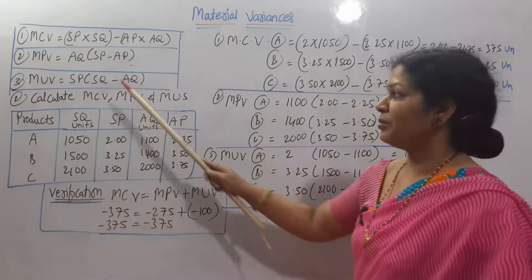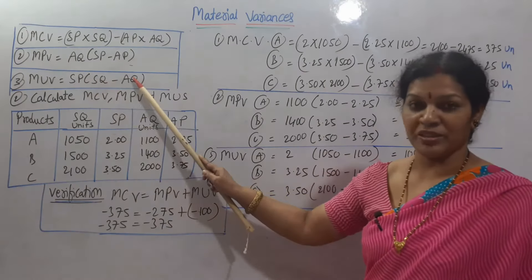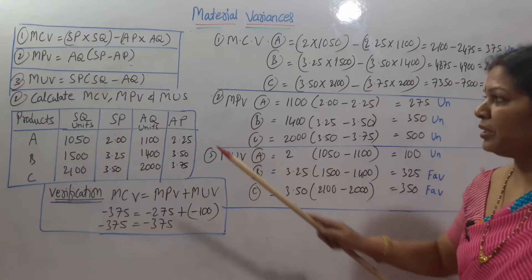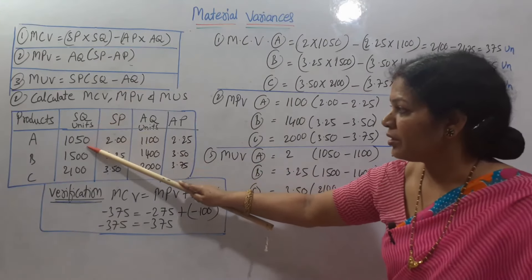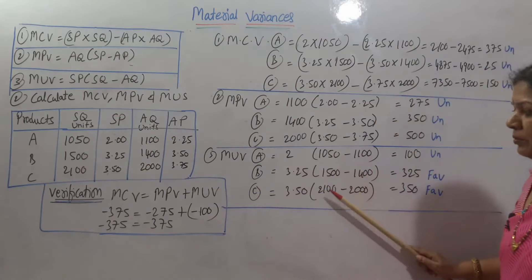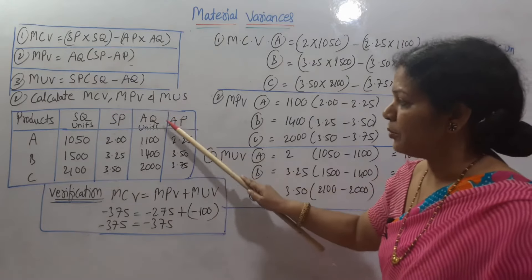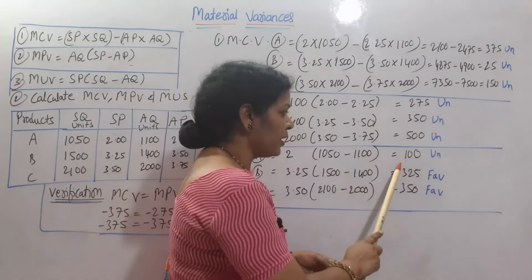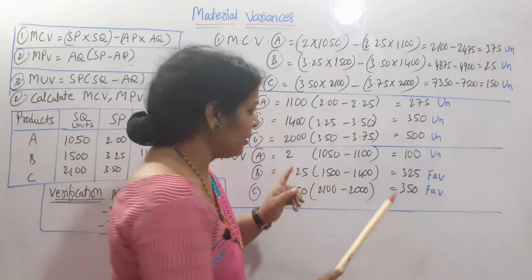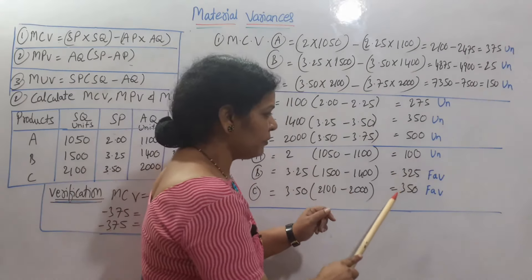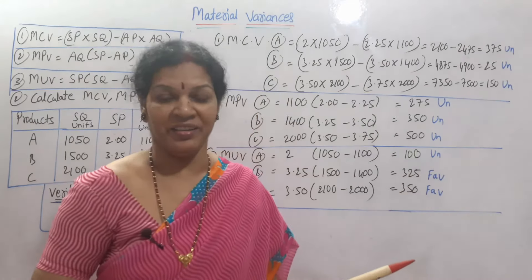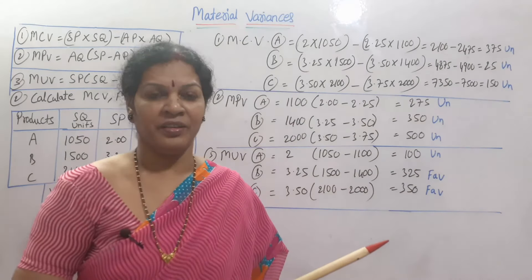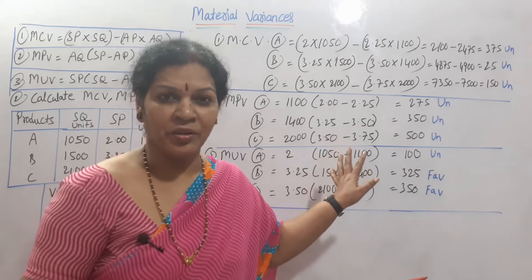Now, material usage variance. Material usage variance formula is SP into SQ minus AQ. SP: 2 rupees, 3.25, 3.50. Into SQ: 1050, 1500, 2400. Minus AQ: 1100, 1400, 2000. If we have done the calculations, getting answer of 100 unfavorable. But for product B and C, 325, 350, these two are favorable. These two are favorable. Rest of everything is unfavorable only.